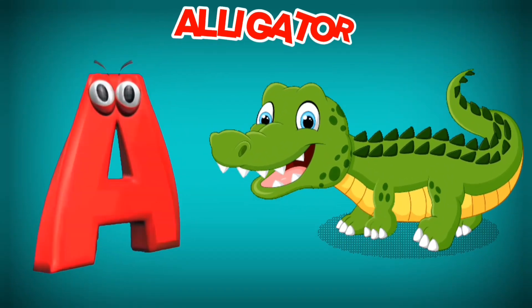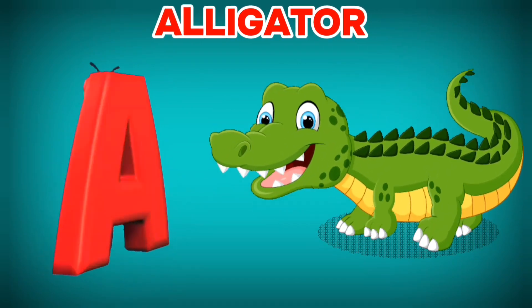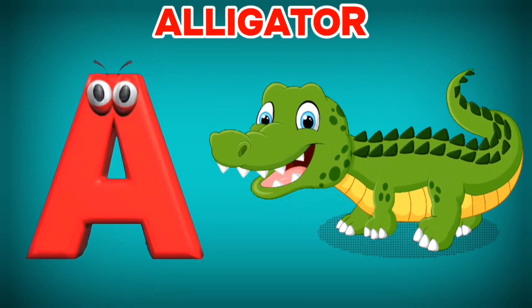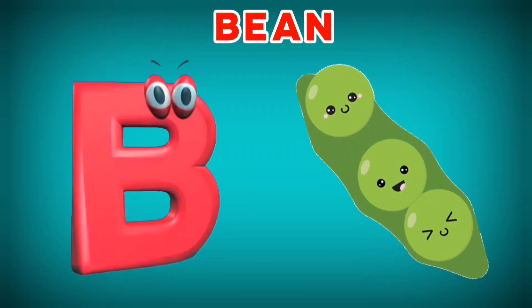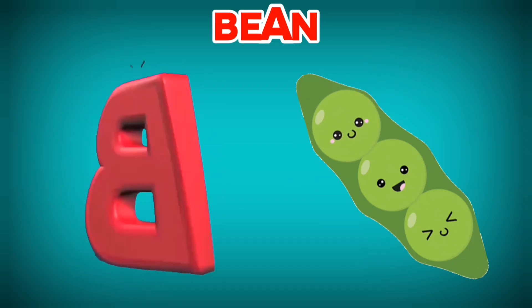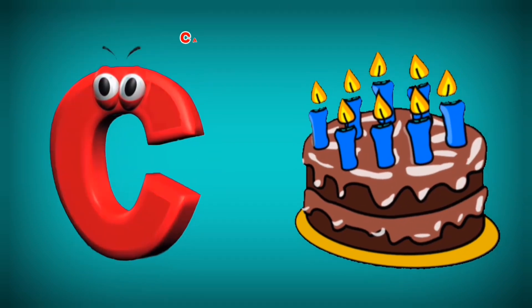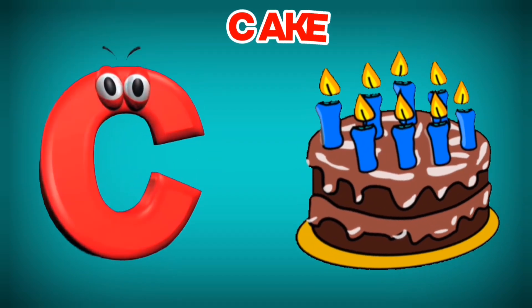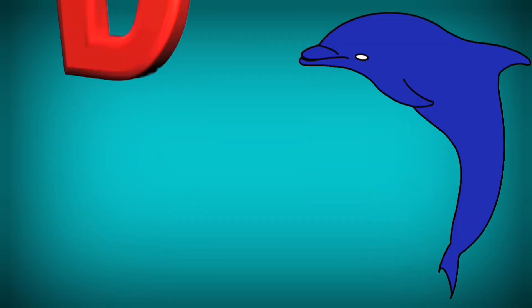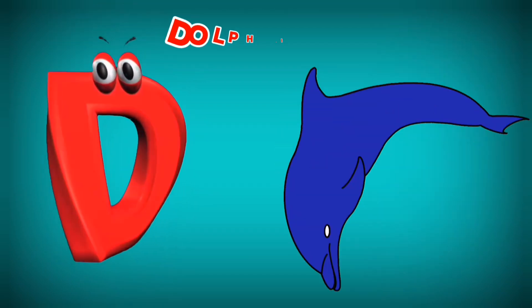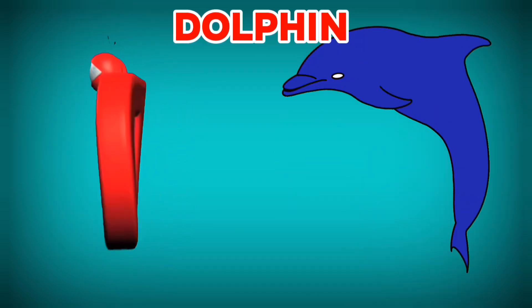A is for Alligator. A, A. Alligator. B is for Bean. B, B. Bean. C is for Cake. C, C. Cake. D is for Dolphin. D, D.